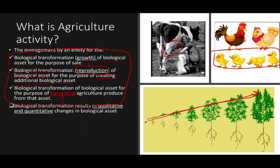Biological transformation results in both qualitative and quantitative changes. Quantitative means you have more units. Qualitative means, for example, a cow might grow — or even die — but the quality of the plant or animal changes. So biological transformation results in both qualitative and quantitative outcomes.